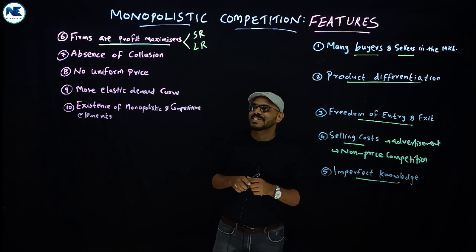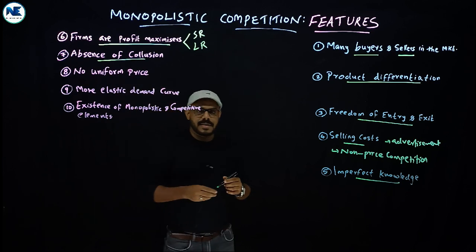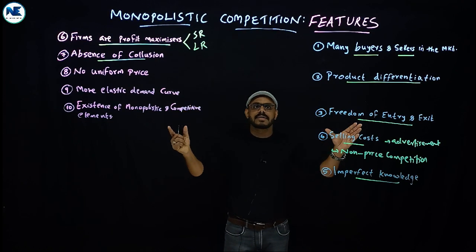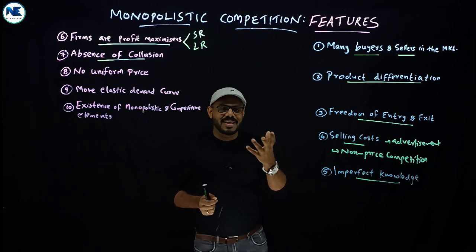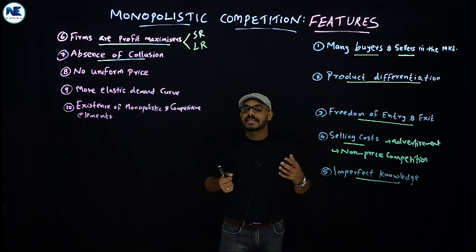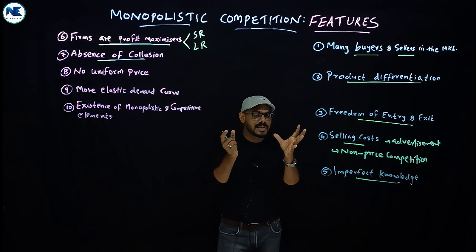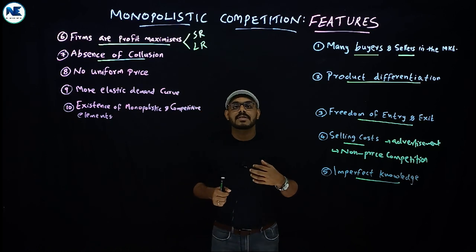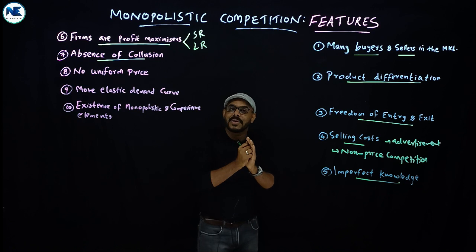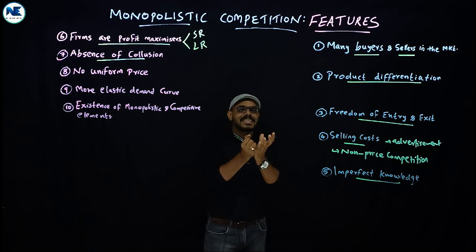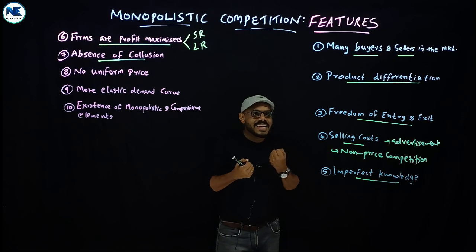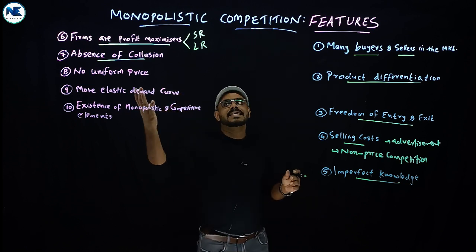The eighth point is the absence of collusion. Collusion means a group agreement — like OPEC, the Organization of Petroleum Exporting Countries, which restricts oil production to influence prices. But in monopolistic competition, firms do not form formal agreements or collude. They compete face-to-face without formal collusion, and each firm independently tries to attract customers.